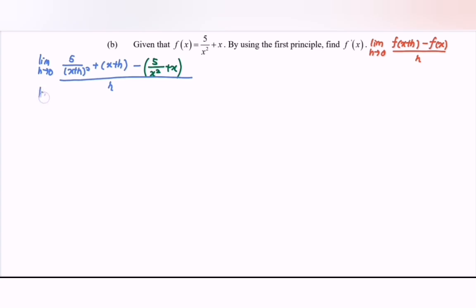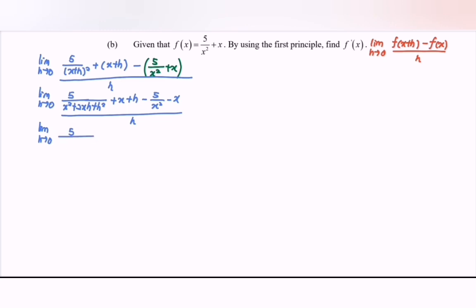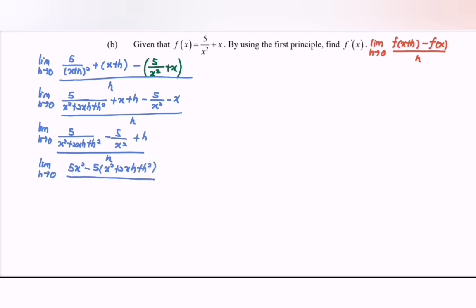Simplifying: limit as h approaches 0 of 5 over x squared plus 2xh plus h squared, plus x plus h, minus 5 over x squared minus x, over h. Equating the denominator: 5x squared minus 5 times (x squared plus 2xh plus h squared), over x squared multiplied with (x squared plus 2xh plus h squared), plus h, over h.